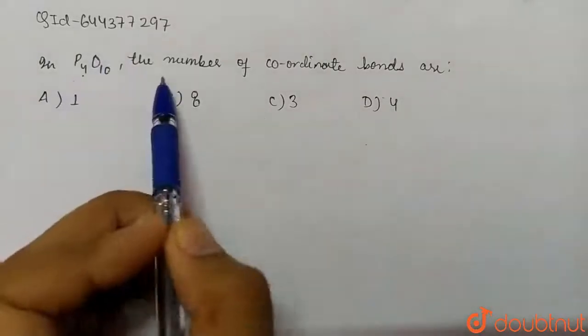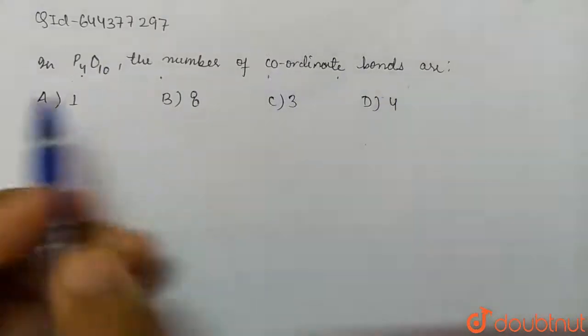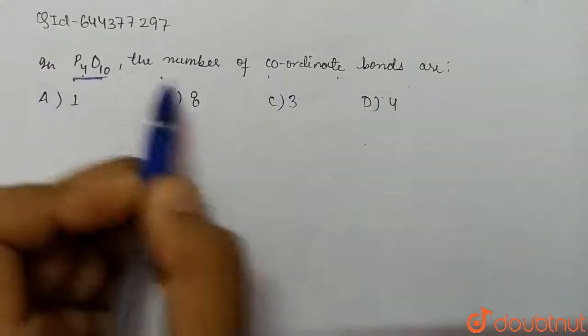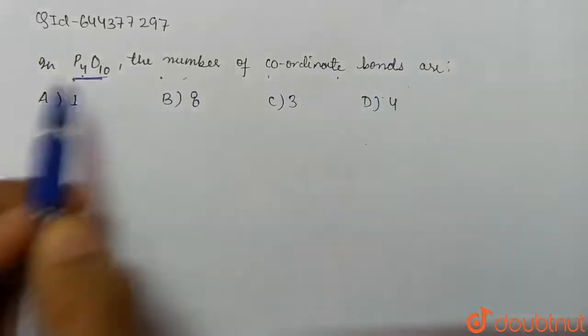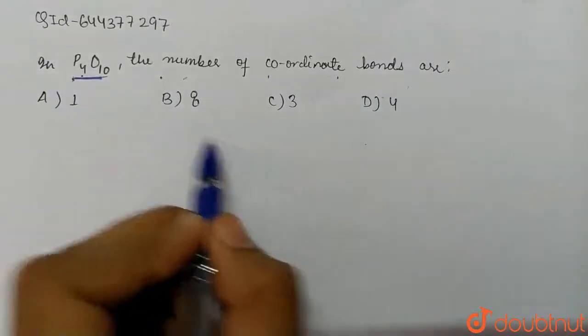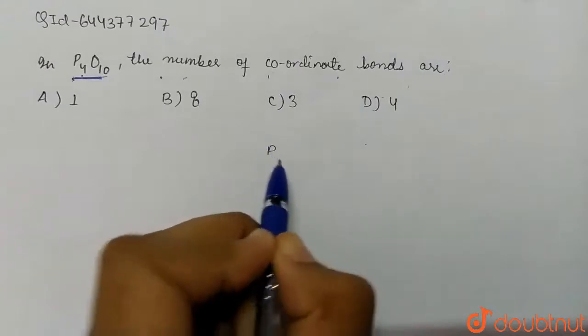in P4O10, the number of coordinate bonds are. So we have P4O10 and we have to find the number of coordinate bonds which are present in P4O10. So let's draw its structure first.